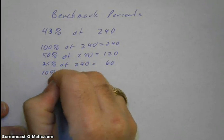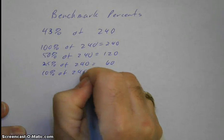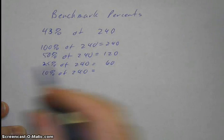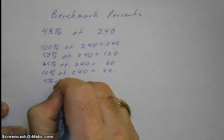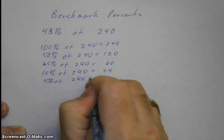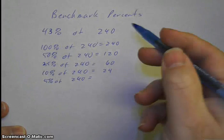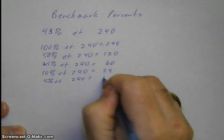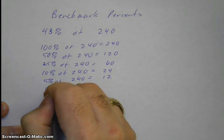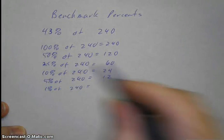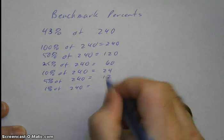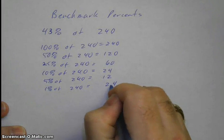10% of 240. Remember, we simply divide by 10, move the decimal point one space to the left. That gives me 24. 5% of 240, that's half of 10, so it gives me 12. And 1% of 240, with this one move two spaces because you're dividing by 100, and you get 2.4.